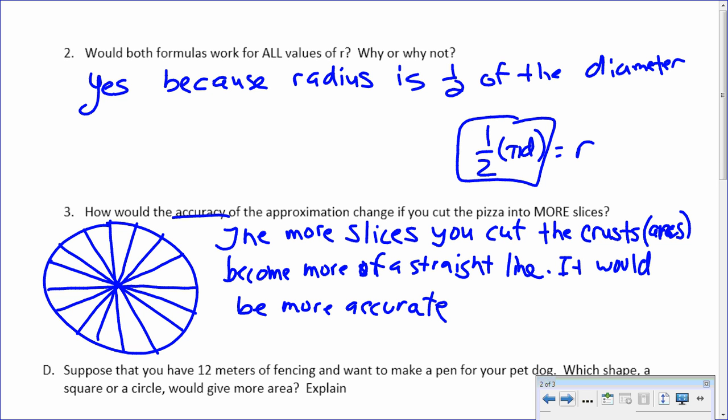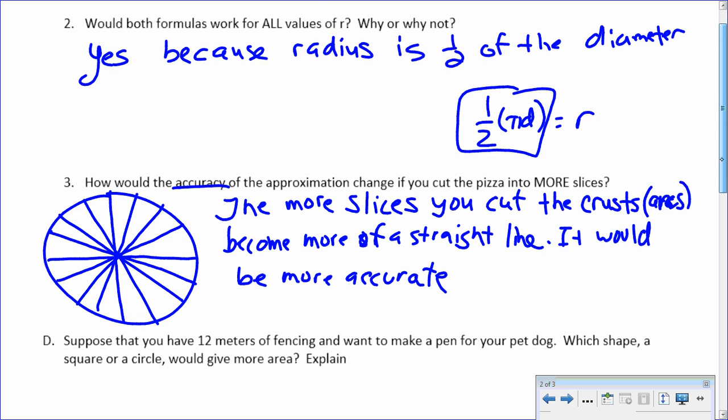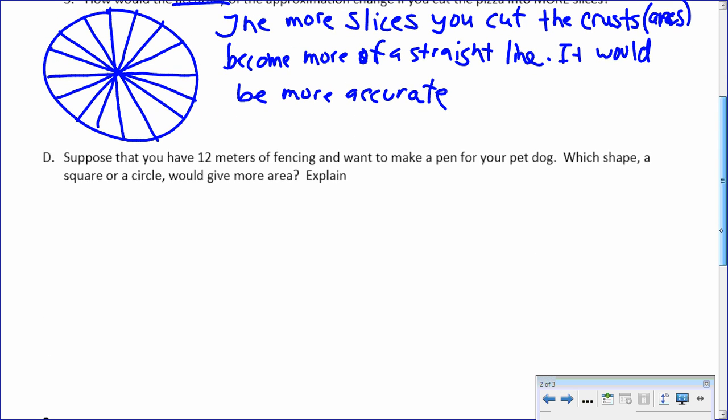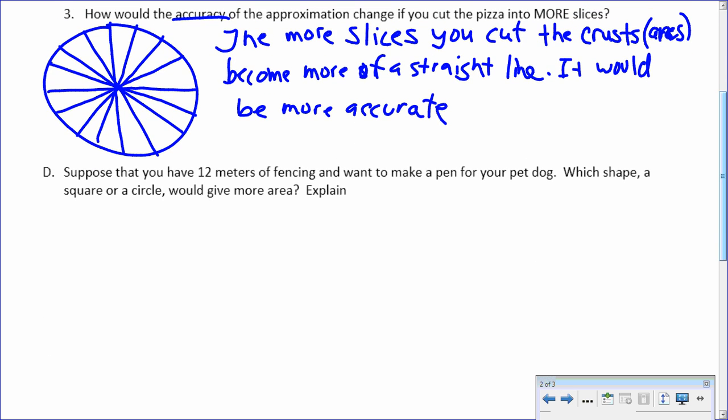All right. So, let's see if you can figure out the last one here. We'll give you some time to work on the last one. So, here, I'll let you write that down. Suppose that you have 12 meters of fencing and want to make a pen for your dog. Which shape, a square or a circle, so you've got two options here to figure out. Which shape would give you more area? So, they want the one that gives you the most area. So, again, we're going to pause this and give you guys some time to work on this. Tell me which would be better.